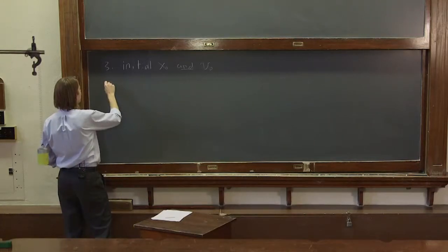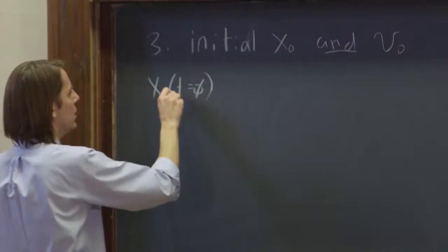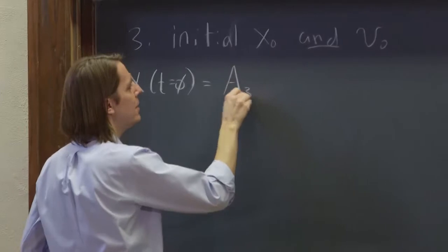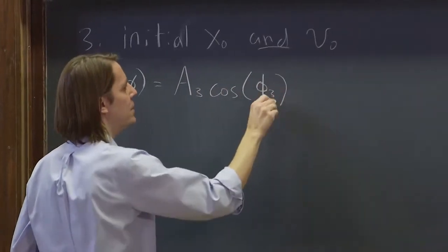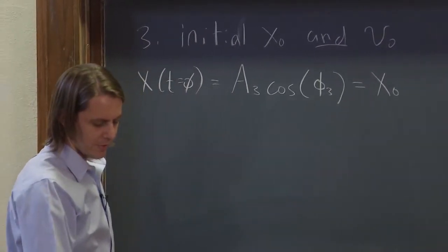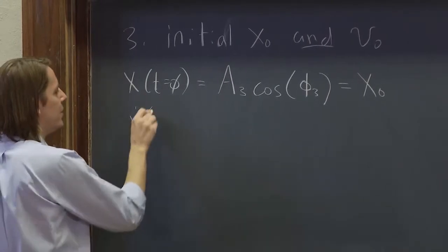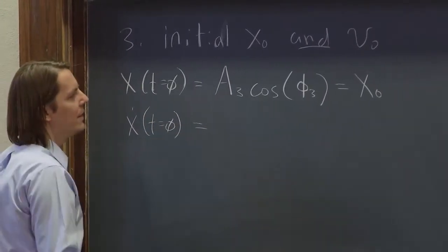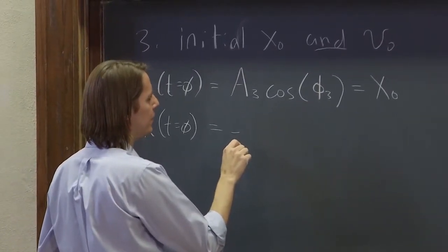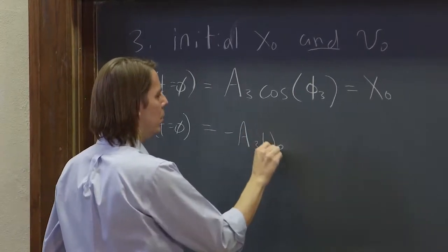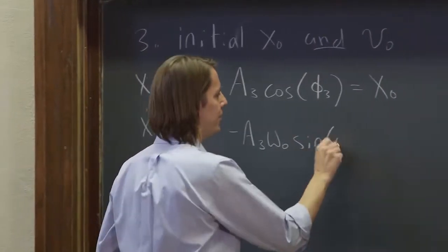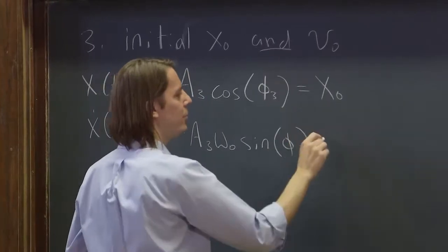So we could start with the x-naught. So x at time equals zero would be a three cosine of phi three, and that's going to be equal to x-naught. So we can't really use that as a zero to give us anything. And then we could use the x-dot at t equals zero part. And that is again minus a three omega-naught sine of time equals zero, so it's sine of phi three. And that doesn't equal zero either. That equals v-naught.